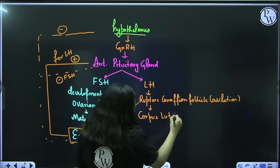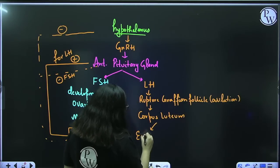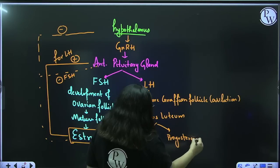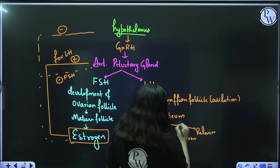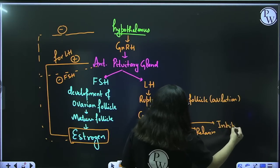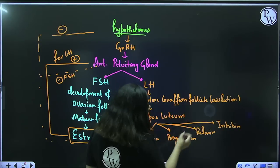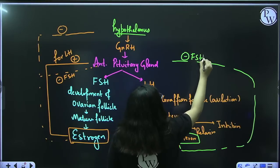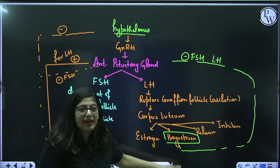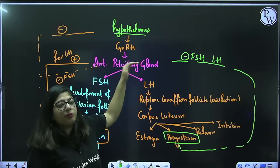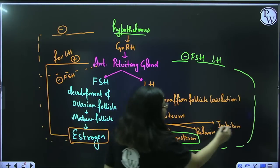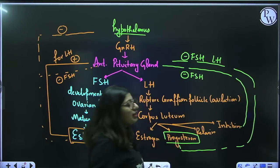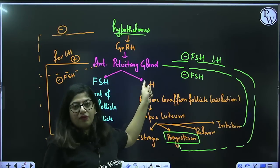So: GnRH stimulates anterior pituitary to secrete FSH. FSH matures the follicle. The mature follicle secretes estrogen. Estrogen tells the pituitary to stop FSH but to secrete LH. LH will rupture the mature follicle — that process is ovulation. After rupture of the Graafian follicle, corpus luteum is formed. Corpus luteum is a rich source of progesterone. Inhibin also gives negative feedback to the pituitary for FSH — just like Sertoli cells secrete inhibin and give negative feedback to FSH in males.